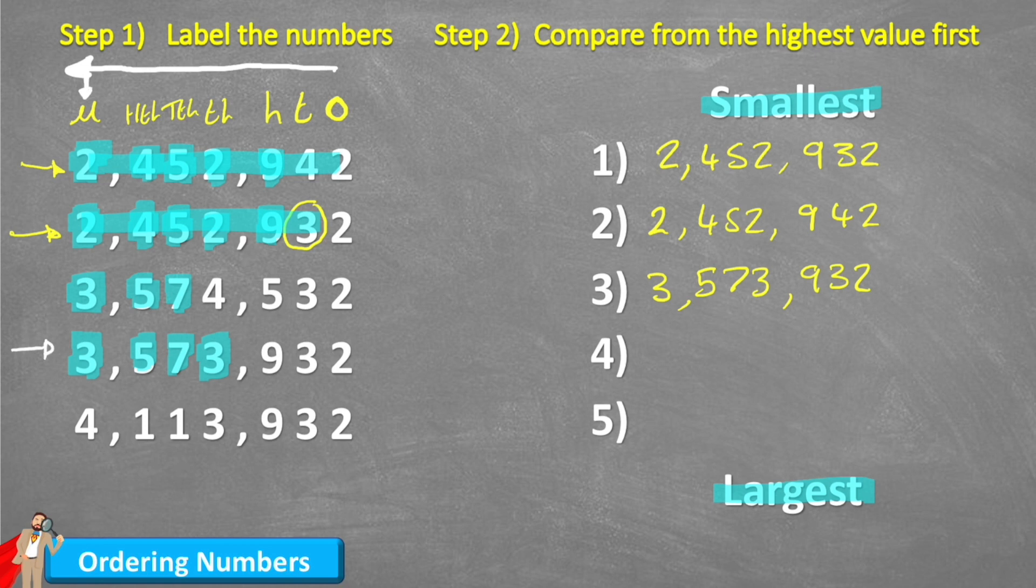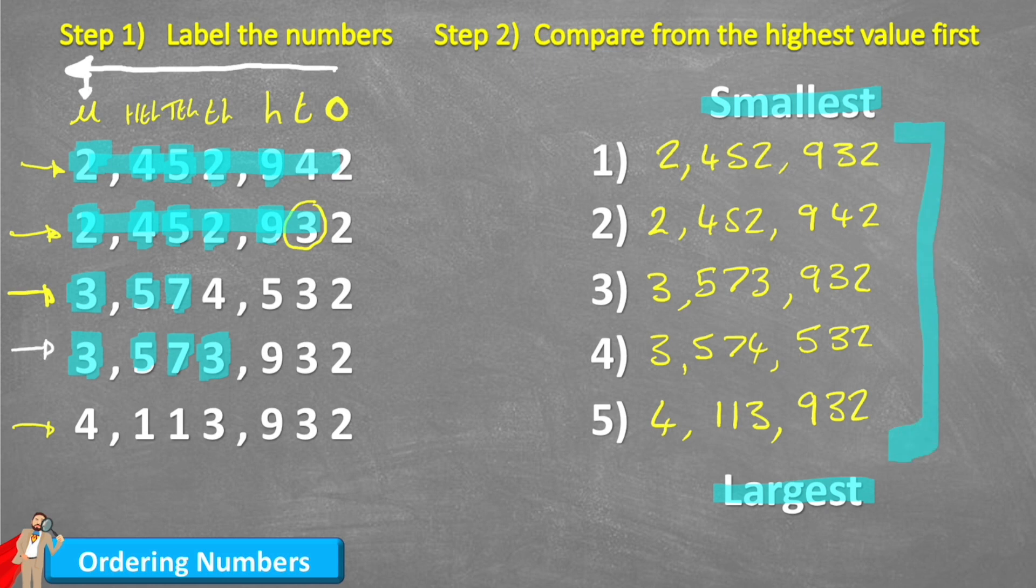And again, just like before, now I know that this one must be my next smallest at 3,574,532. And that only leaves me one last one, which is 4,113,932. And now a good tip, now that we've organized them, is just to double check by just looking at our numbers in this sequence and just check that we know that they are in the right order. And in this case, yes, they are.